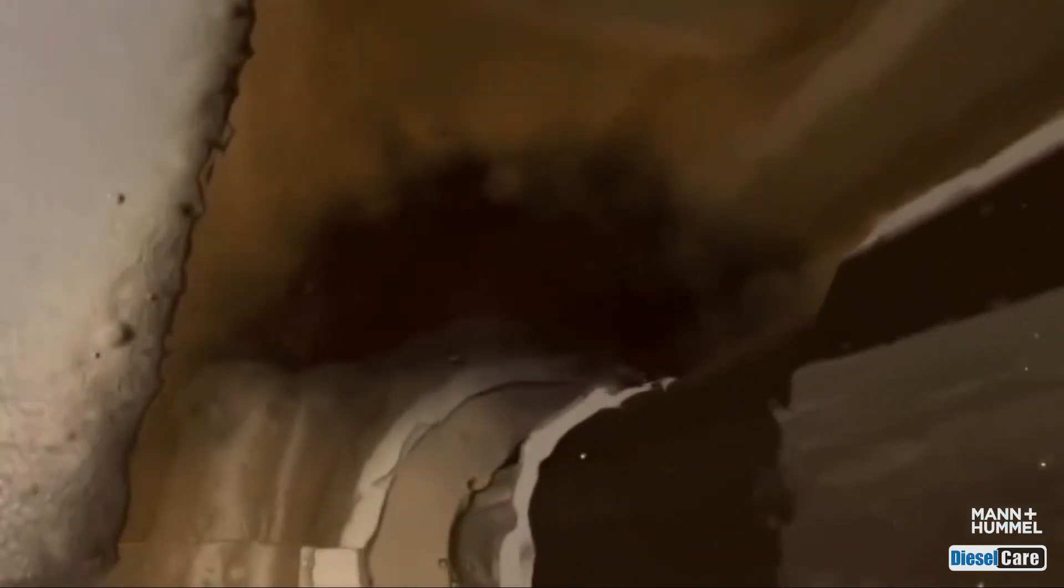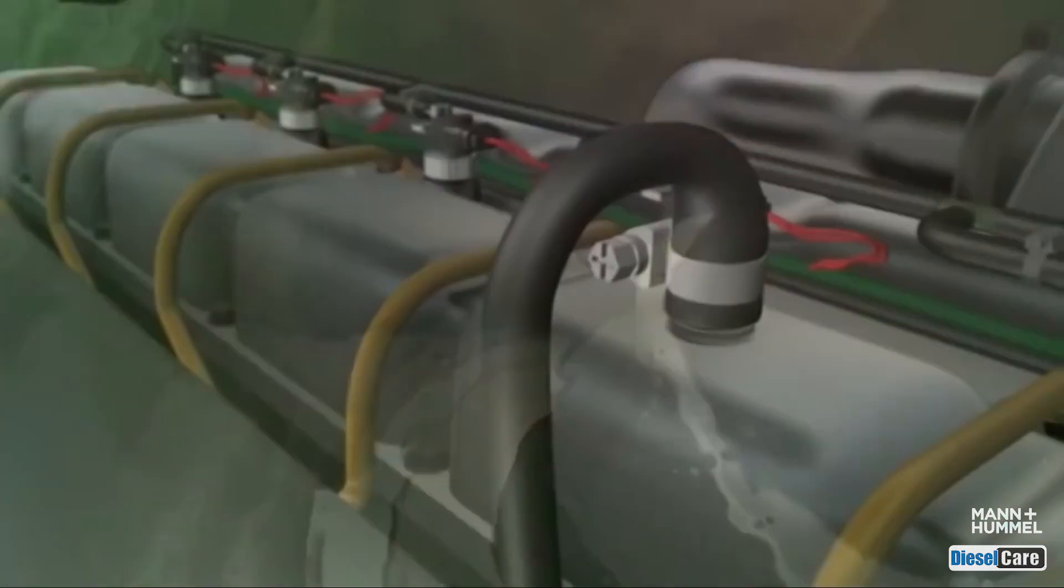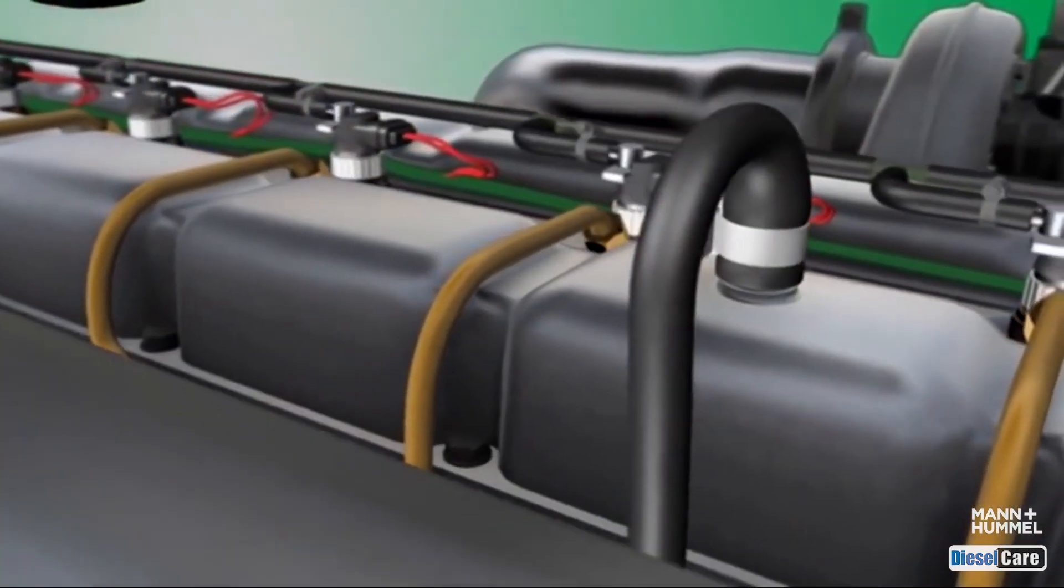In the crankcase, the blow-by gas is enriched with oil. This gas is not eco-friendly but still has to be continually removed from the crankcase to prevent an inadmissible rise in pressure. In the simplest case, this removal is made via an opening in the crankcase.